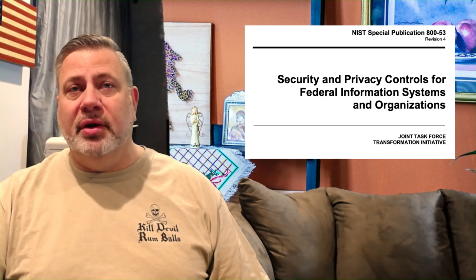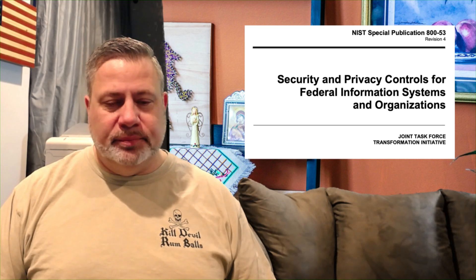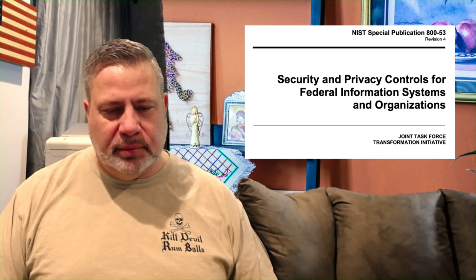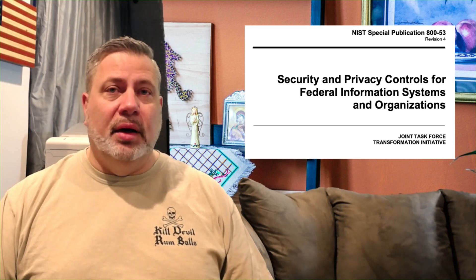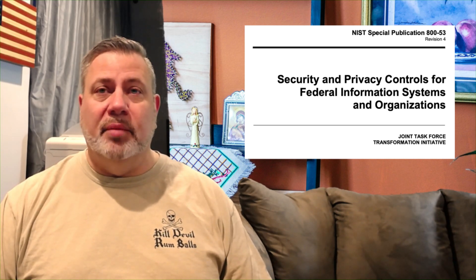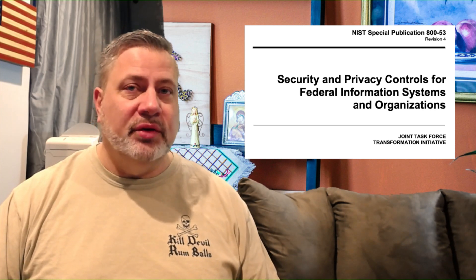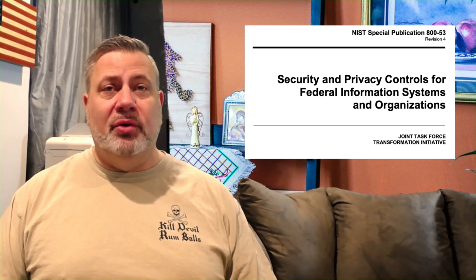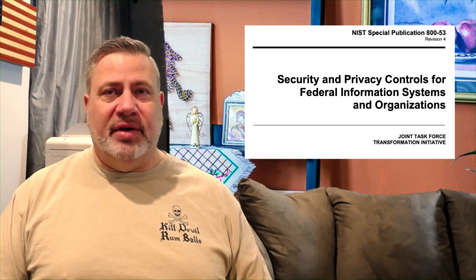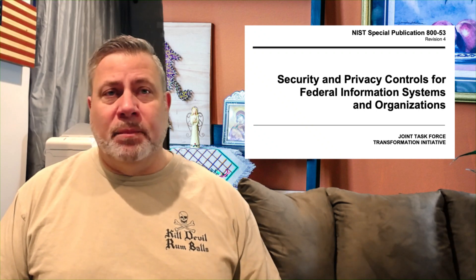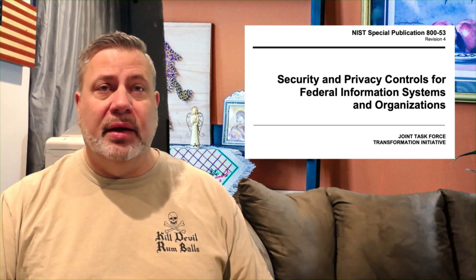Today we're going to talk about a security control from NIST Special Publication 800-53, which is the control catalog. A lot of you know that one. It's the catalog that goes with the Risk Management Framework or the Cybersecurity Framework, and both of those are important. But the thing about the control catalog is it really doesn't have to be used with any framework at all. It's just a set of controls we can implement to secure any system. It's freely available on the internet — you can download it and check it out. It's got a lot of good information in it.